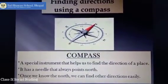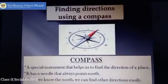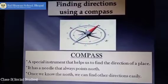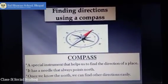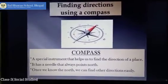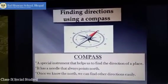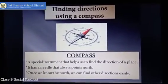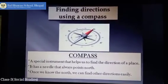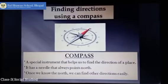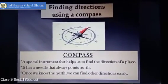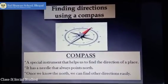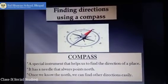We can also find directions by the stars. The bright pole star is always seen in the North at night. We can find the other directions easily at night with the help of this star — the pole star, which is also known as the North star.